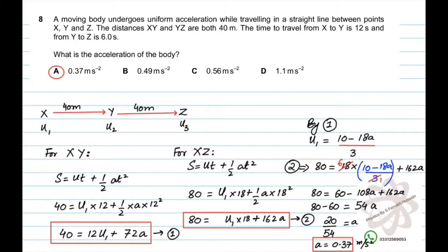If you have to find out the acceleration of the body, you have to divide the journey into X to Y and Y to Z. We are applying the formula s equals ut plus half at squared, and the distance from X to Y is actually 40. The velocity at X is u1 and the time taken from X to Y is 12. So by simplifying you get 40 equals 12u1 plus 72a.